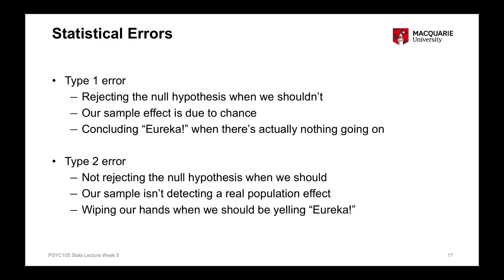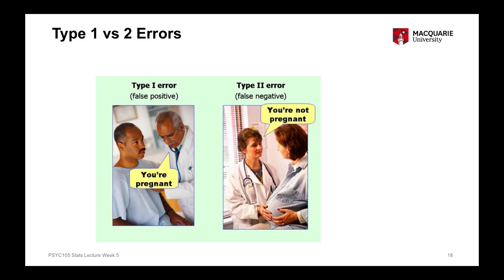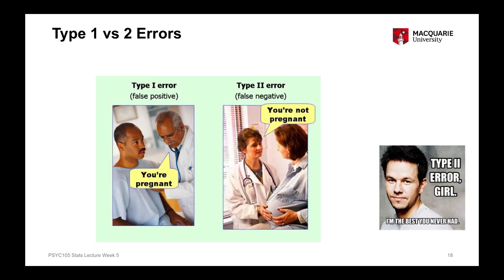These are two different kinds of mistakes we can make. The problem is we never actually know if we've made one or the other of these types of errors in any one particular study. This difficulty is inherent to the process of inferential statistical testing. The reason we gather data from a sample is because we don't know if an effect exists in the population — and the whole point of research is to find out. But through that process, we can make mistakes, because it's all based on probability.